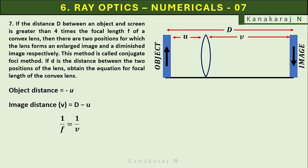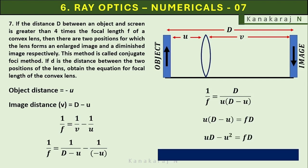Lens formula: 1 upon f equals 1 upon v minus 1 upon u. The v is given as D minus u, and u is minus u. On simplifying we get a quadratic equation u square minus uD plus fD equals 0.